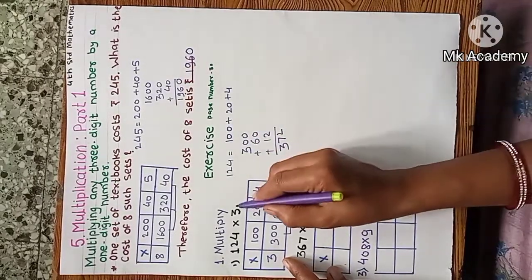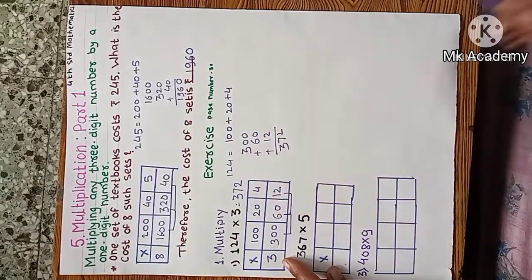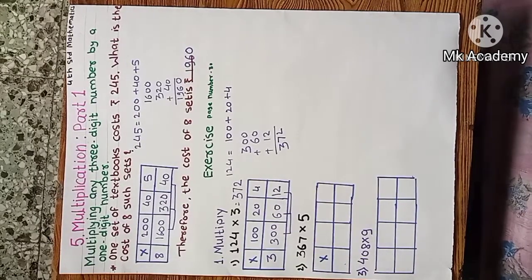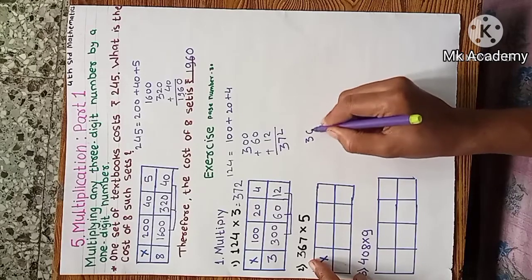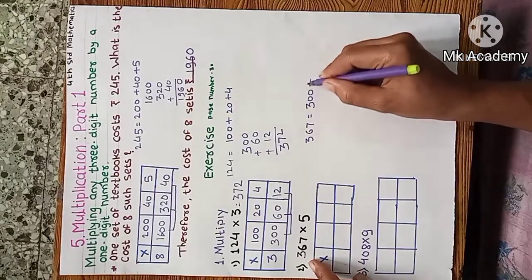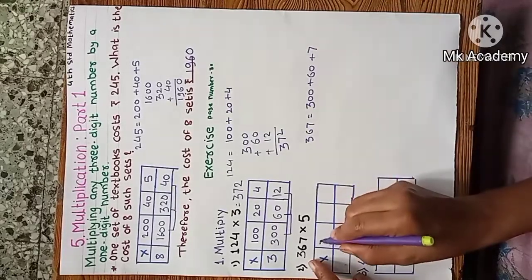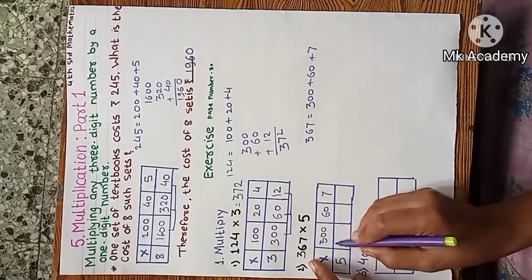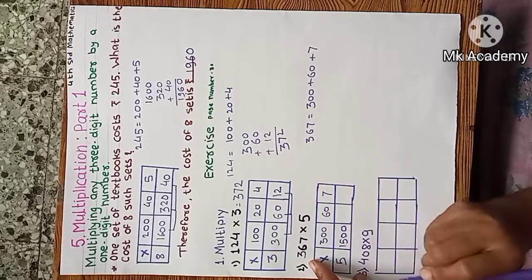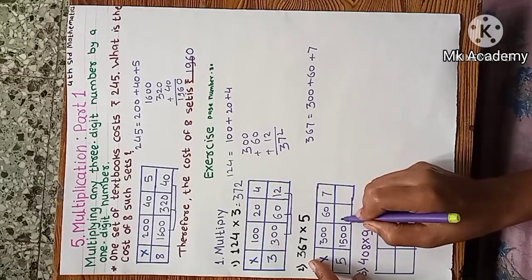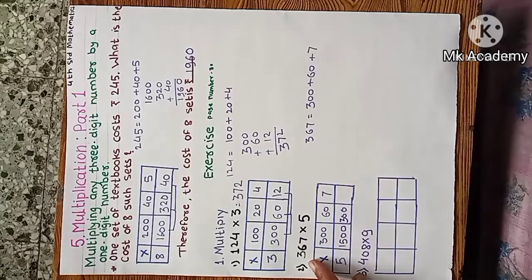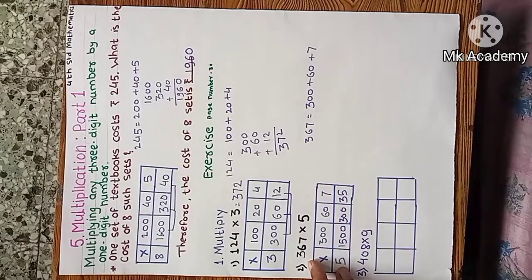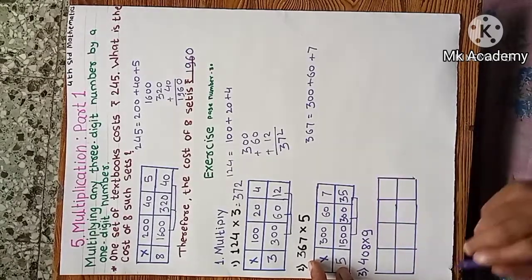Next example: 367 multiplied by 5. We know that 367 is equal to 300 plus 60 plus 7. So 300 plus 60 plus 7, multiplied by 5. 5 threes are 15, so 1500. 5 sixes are 30, so 300. 5 sevens are 35. Now we add all this — this is our answer.